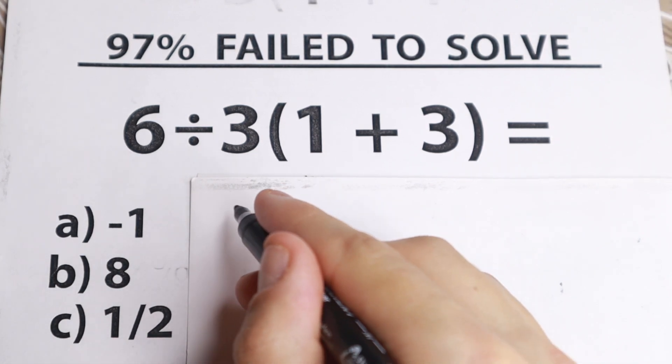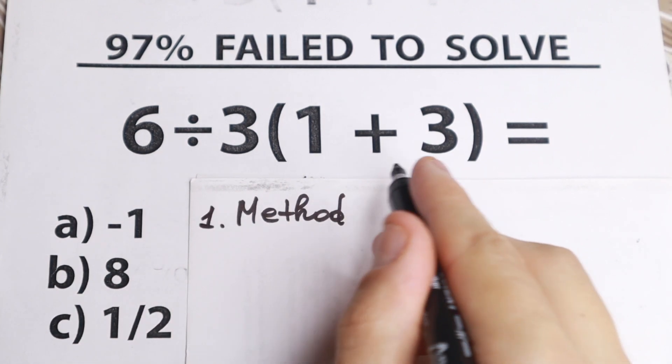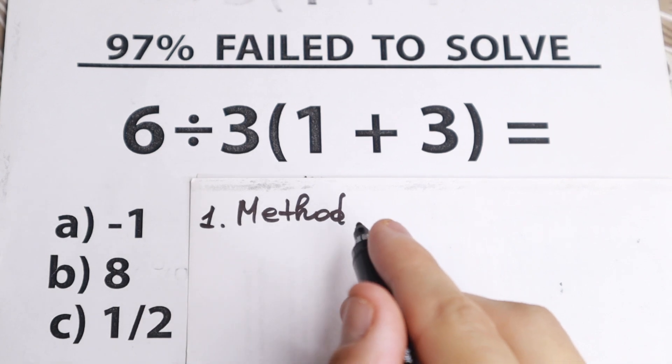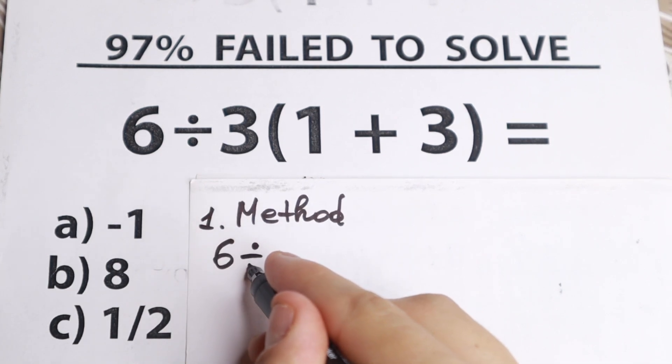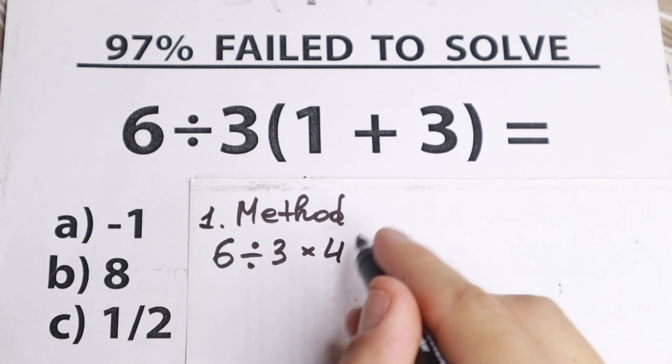The first method, if you look closely, we have method 1. If we go with parentheses at first, of course we can do this. We need to do this because at first we need to go with parentheses. We have 1 plus 3. So we have 6 divided by 3. And if we add 1 plus 3 we'll have 4. So times 4.